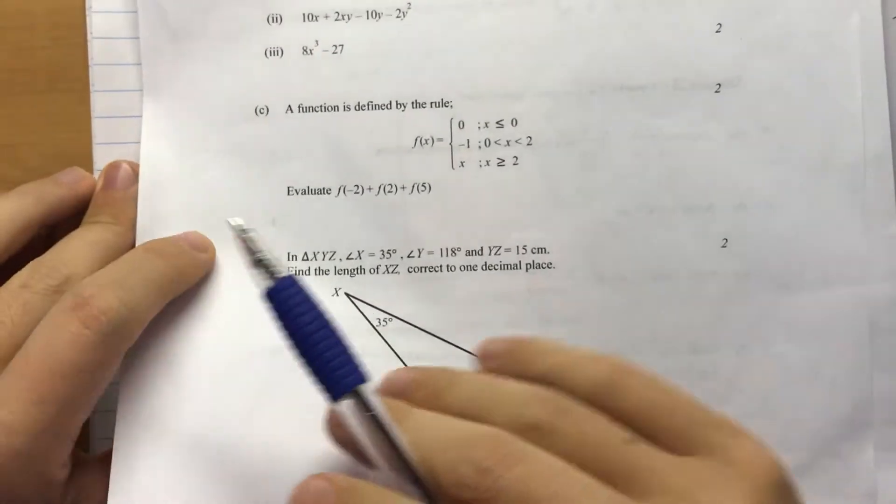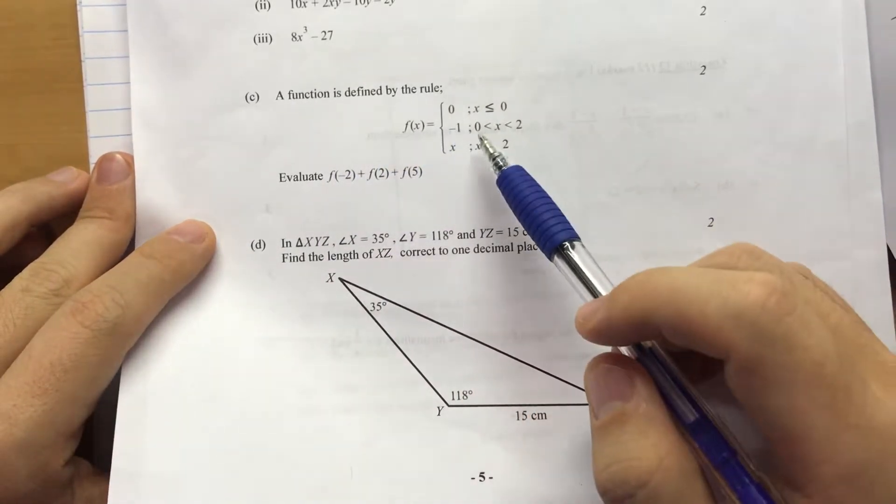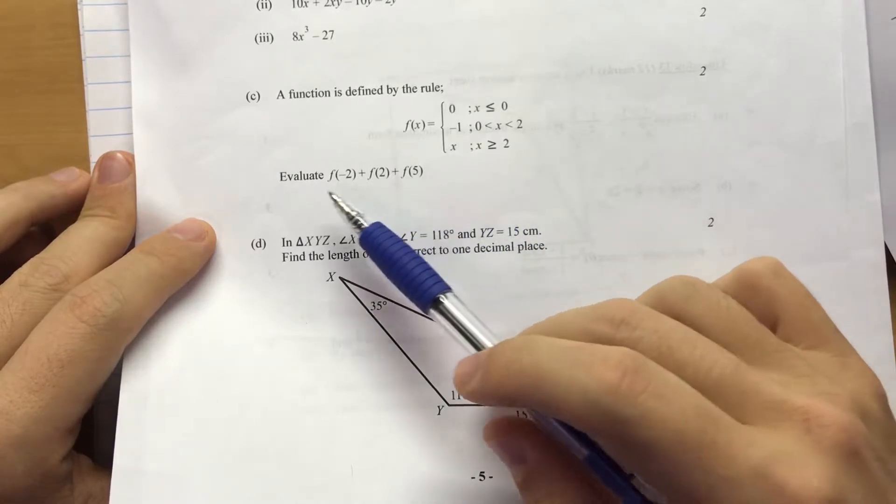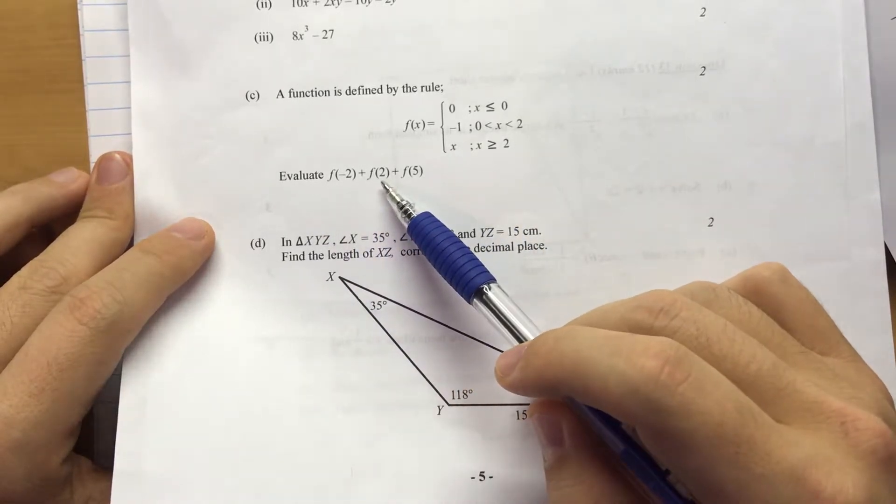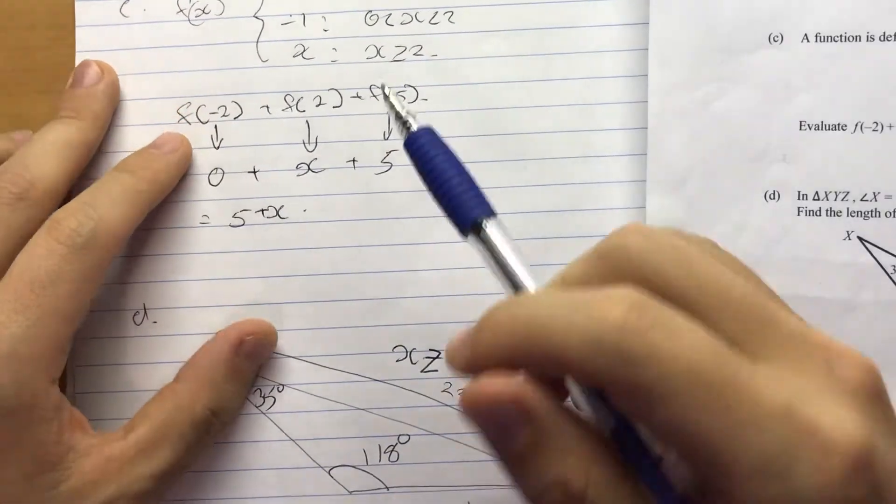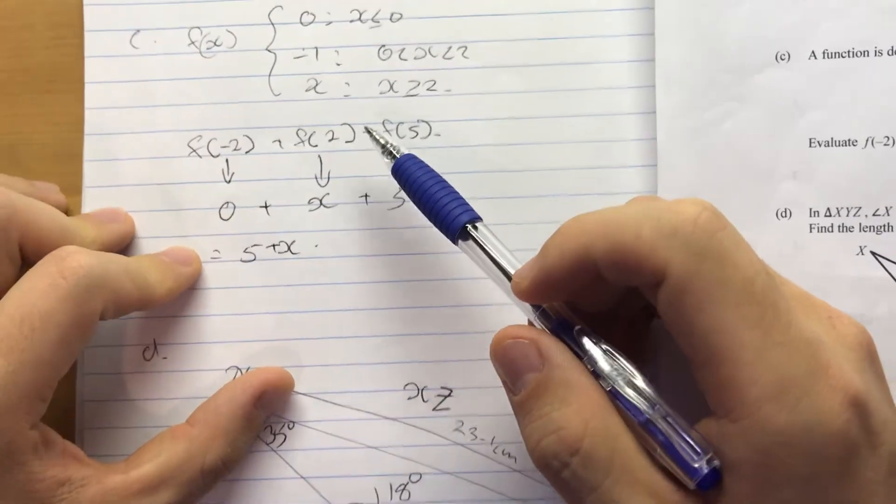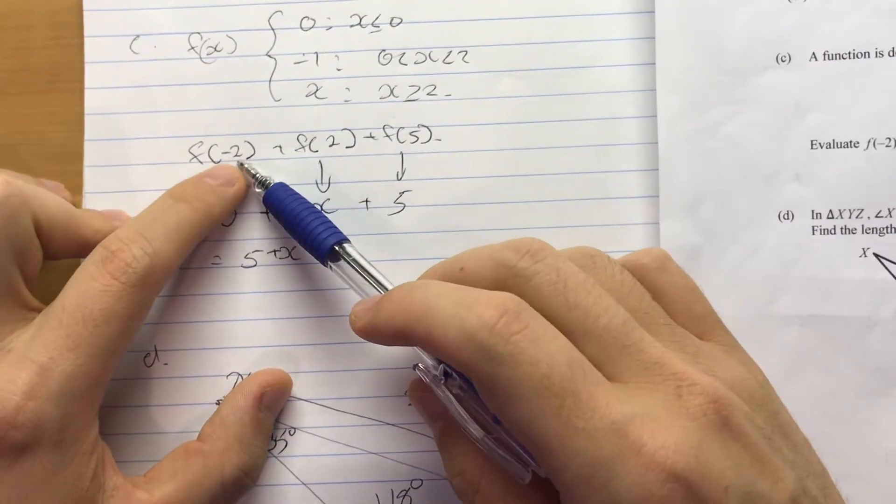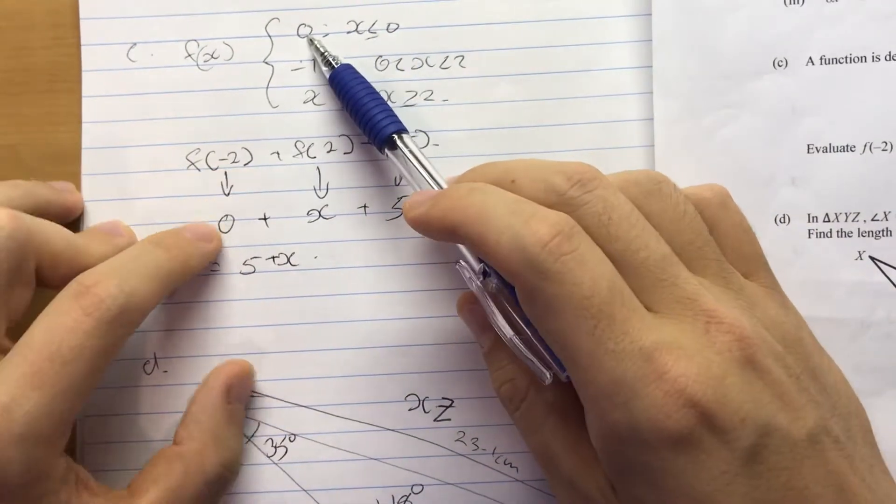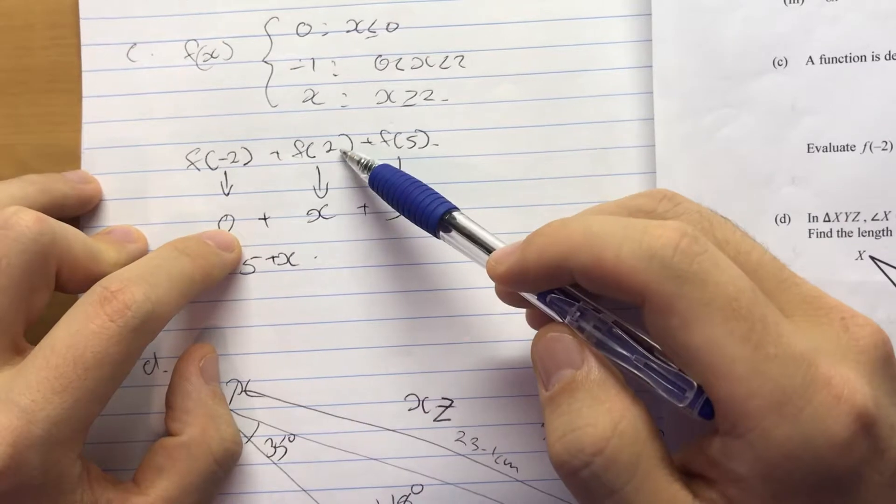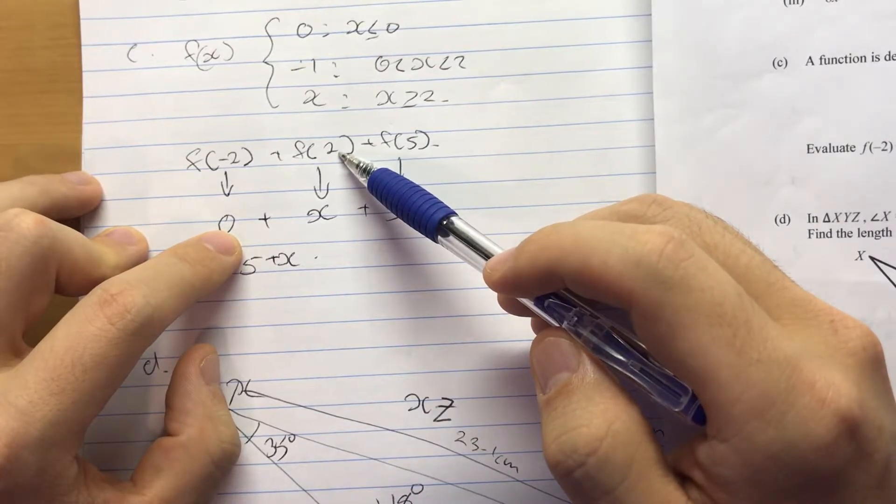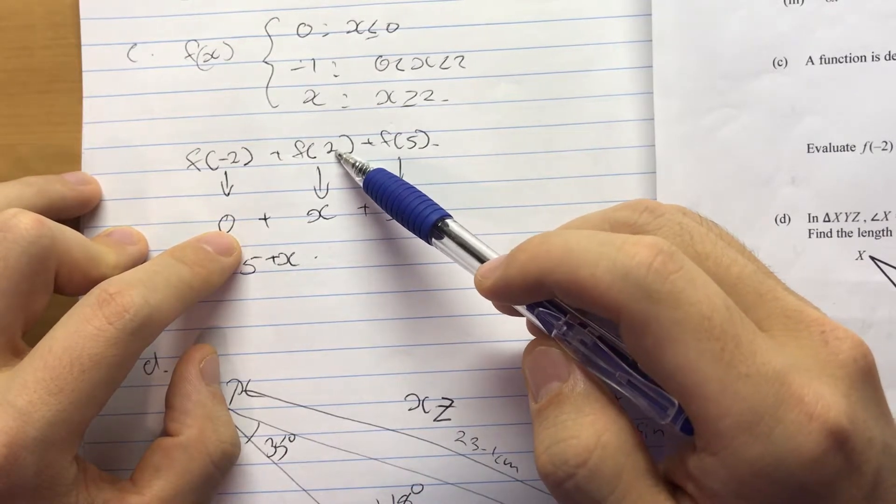Okay, then we look at part C. The function is defined by this rule. Evaluate f(-2) + f(2) + f(5). Okay, so f(-2). Well what happens when x is -2? We're in the first case. The function value is 0. Okay, that's good. f of 2. So f of 2. No, this is 2. Sorry, it's just hard to read 2.